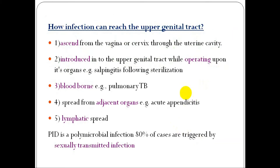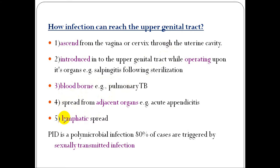Infection can reach the upper genital tract by: ascending from the vagina and cervix through the uterine cavity; introduced to the upper genital tract during operative procedures such as sterilization of the tube; blood-borne spread; or spread from adjacent organs such as acute appendicitis or gastrointestinal tract infection via lymphatics.